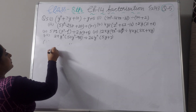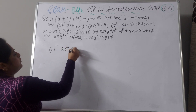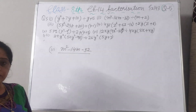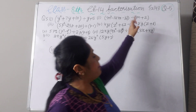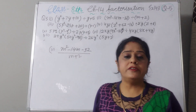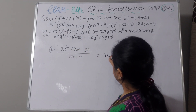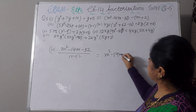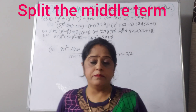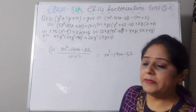m squared minus 14m minus 32, and you have to divide by m plus 2. We will solve the numerator first. m squared minus 14m minus 32 — we will use split the middle term because it is not a perfect square.